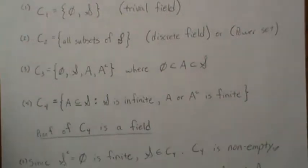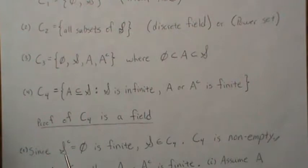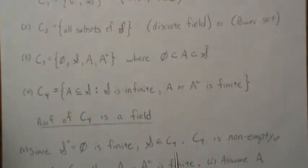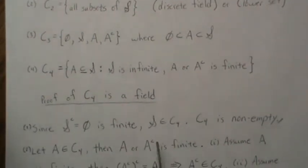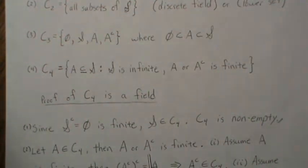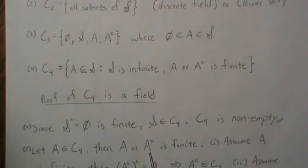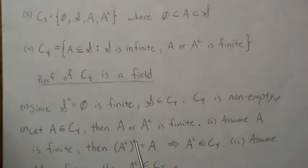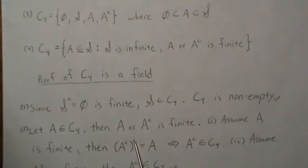Let's prove C4 is a field. Since S complement — the empty set — is finite, that means S is in C4, so C4 is non-empty, satisfying F1. For F2, let A be in C4. Our goal is to show A complement is also in C4. Since A is in C4, then A or A complement is finite. There are two cases. First, assume A is finite. Then A complement's complement, which is A, is finite — so A complement is in C4. Second, if A complement is already finite, it's automatically in C4 by definition.